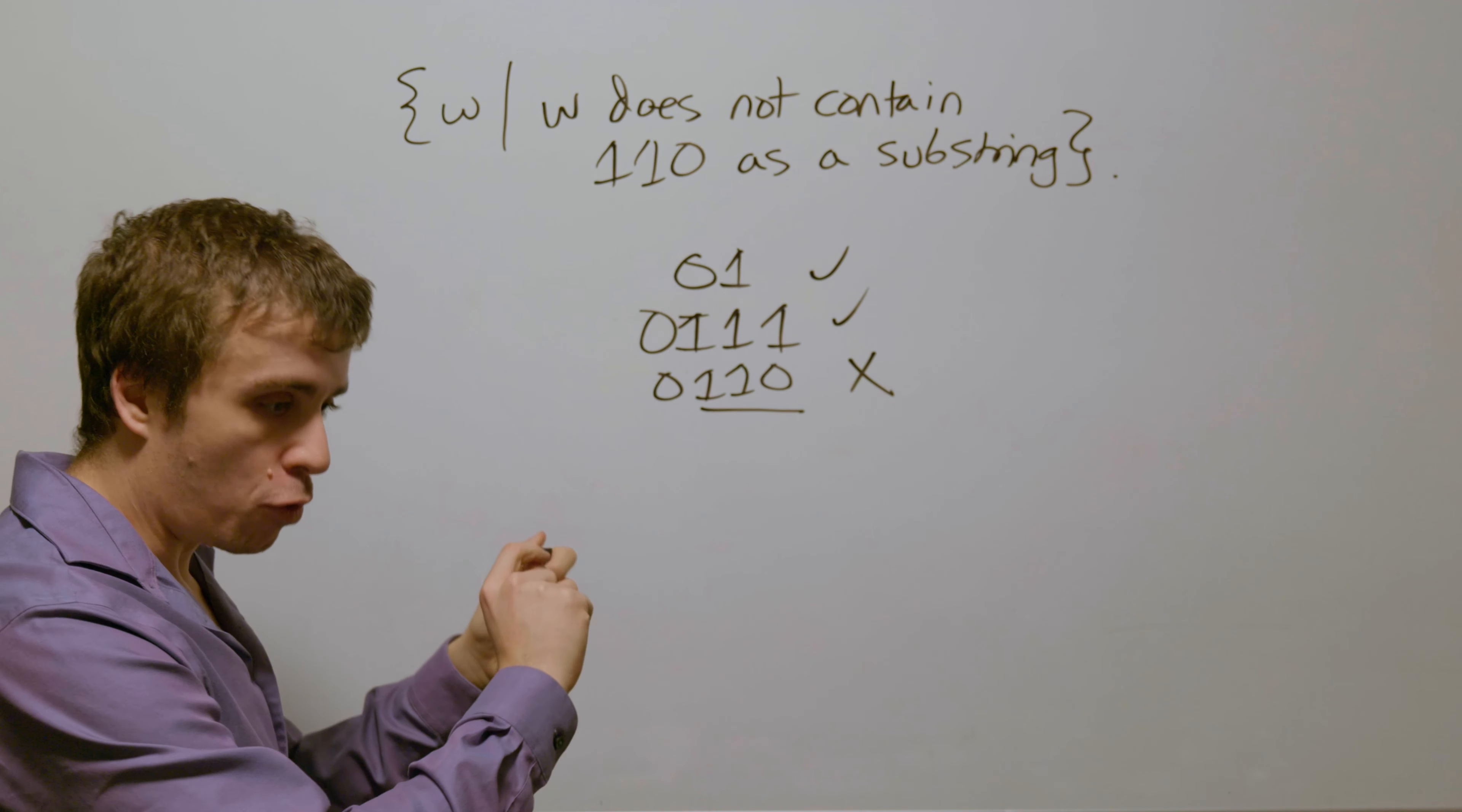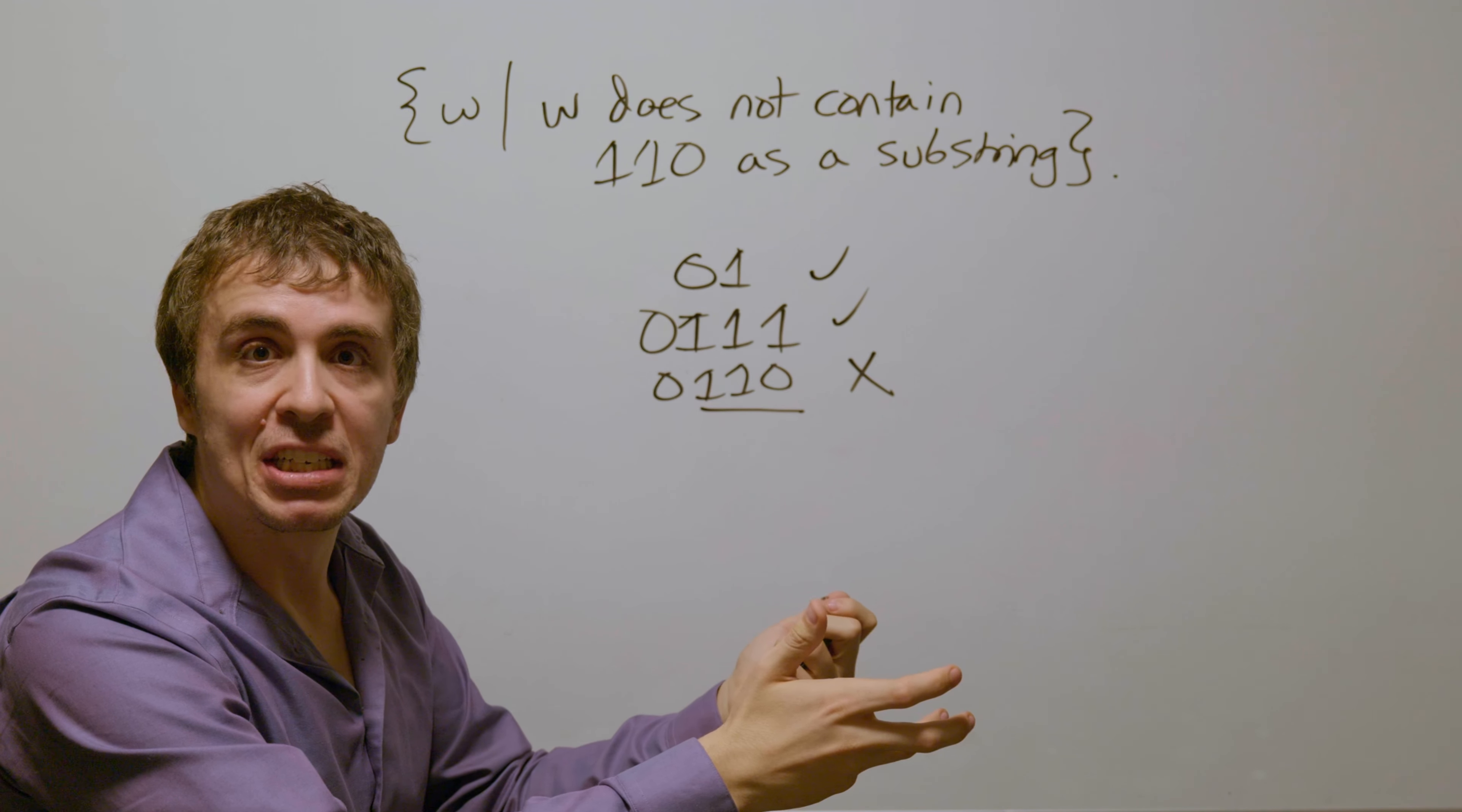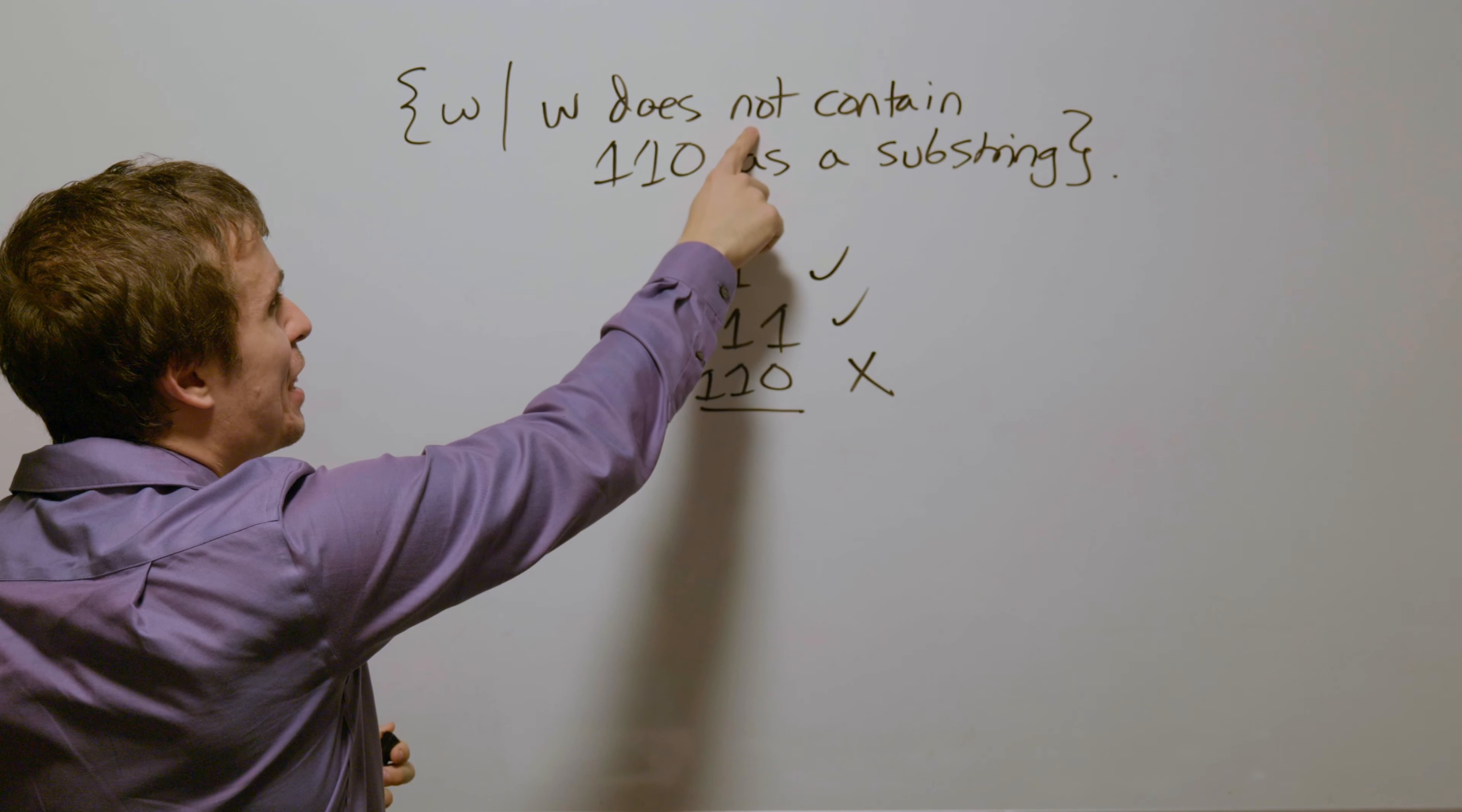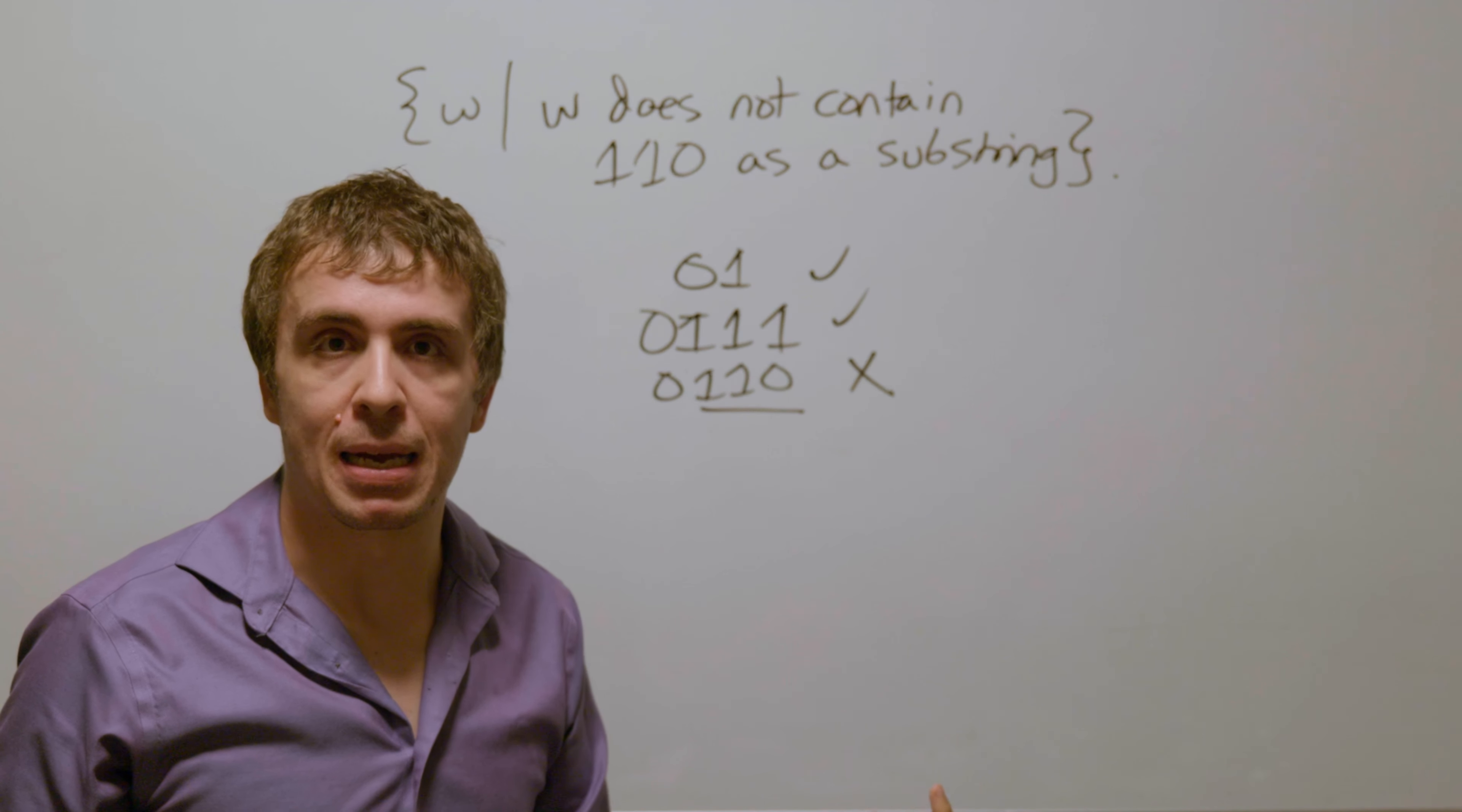Because we just look for have we read 110 and then just immediately accept right there once we've read the rest of the string. We don't go anywhere else. We got this pesky 'not' in here. Well, this is where closure under complement comes to save us.